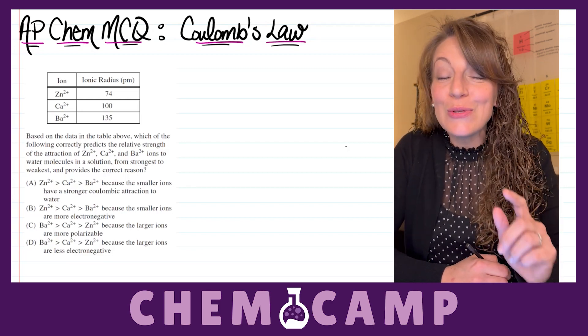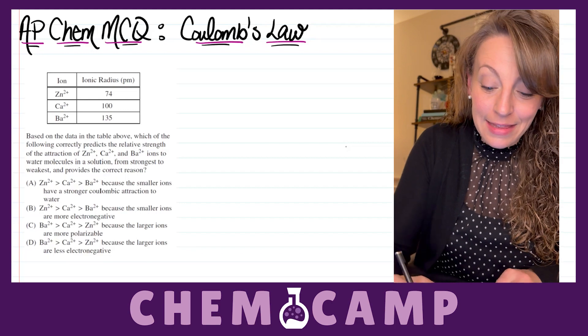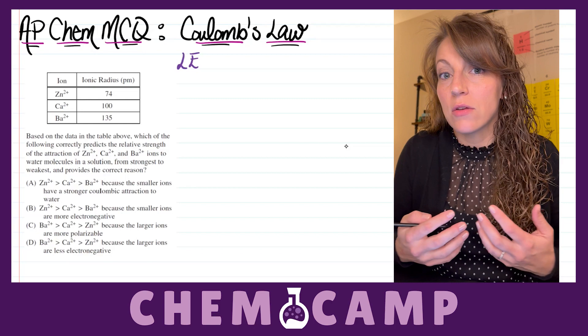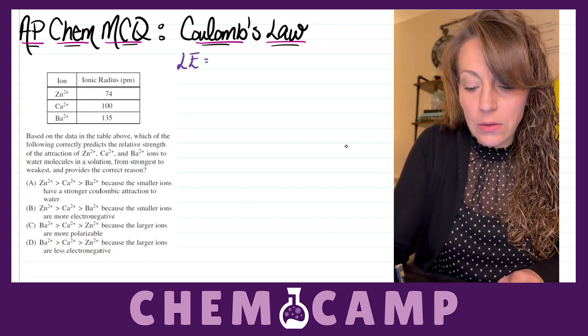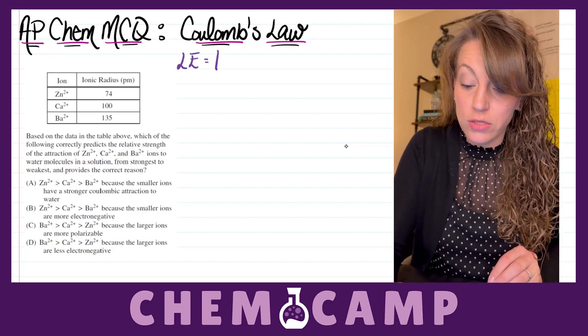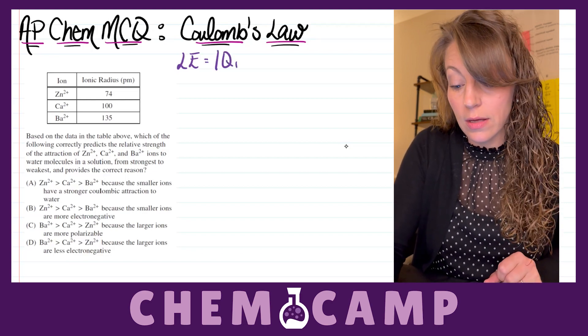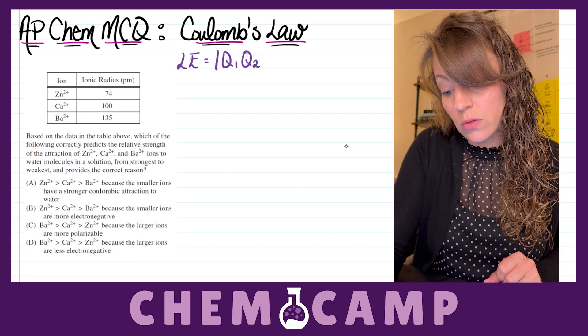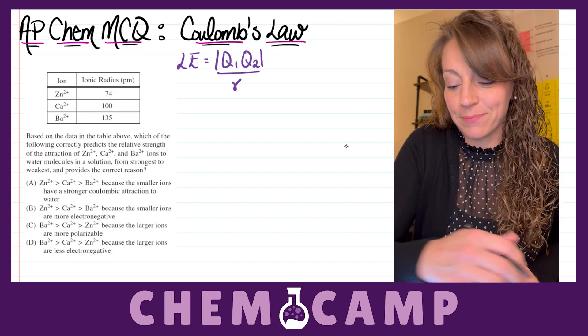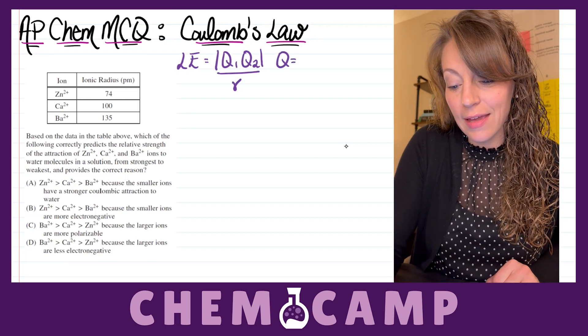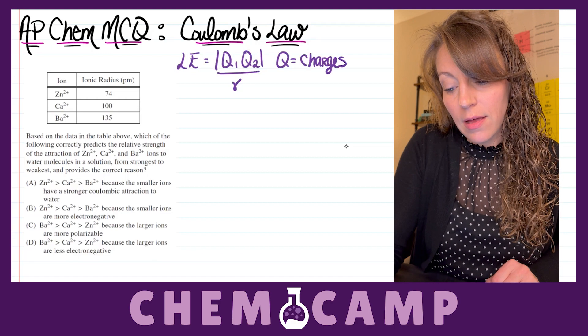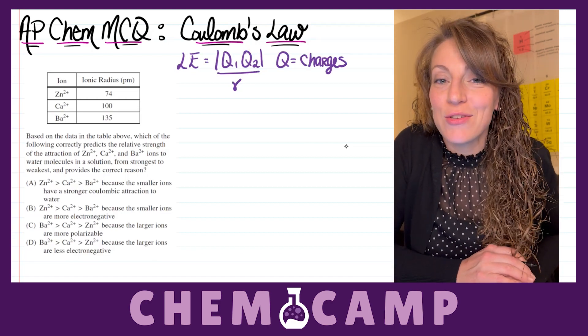Coulomb's Law states that the lattice energy, or the energy associated with that attraction, is going to equal the absolute value of the product of the charges involved—so Q₁ times Q₂—all divided by lowercase r. The Qs, again, are going to be your charges.